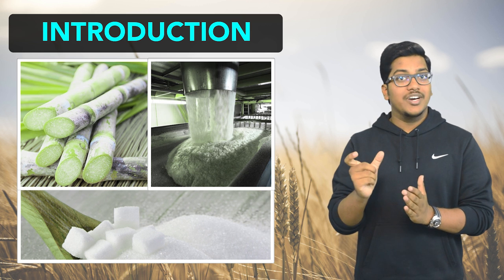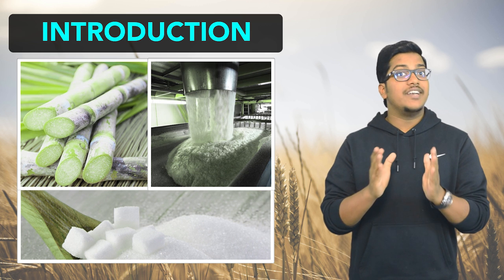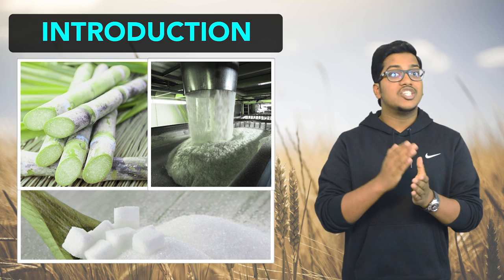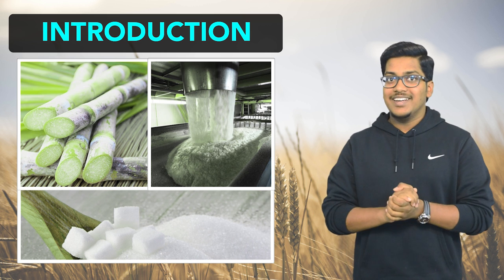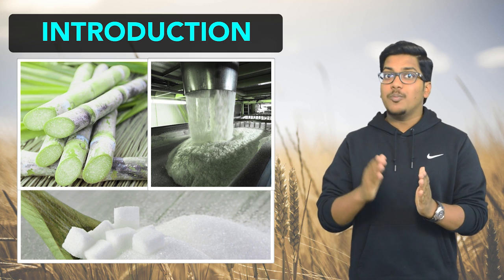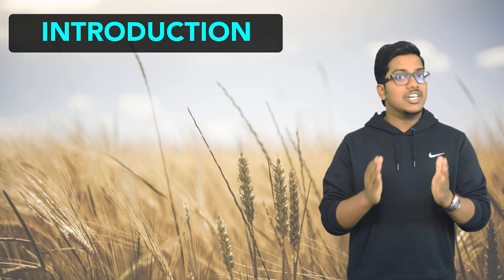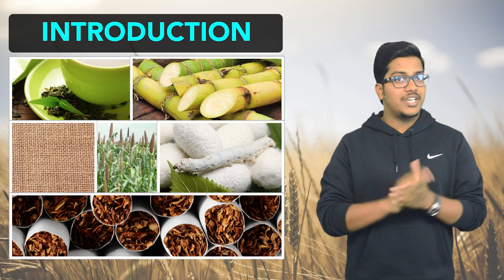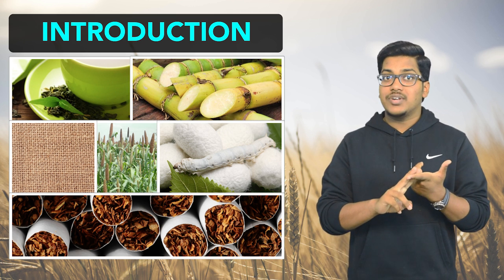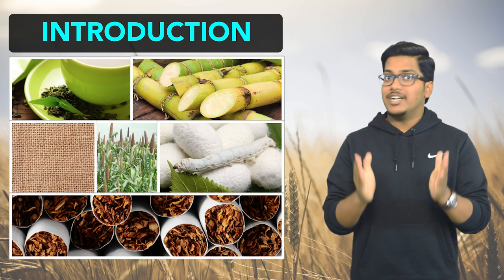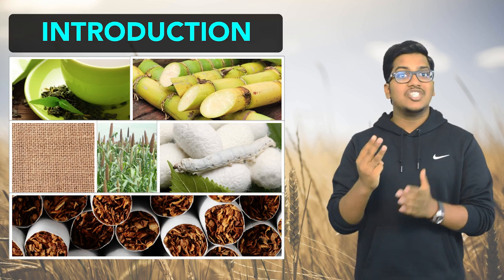ये lecture record करने से पहले मैंने Coca-Cola पी थी जो की एक sugar drink है. Sugar industry के लिए raw material हुआ sugar जो की sugarcane से मिलता है, यानि कि sugar industry भी agro-based industry है. आज India tea और sugarcane का largest producer है, jute, bajra और _____ का second largest producer है, और tobacco का third largest producer है.